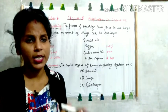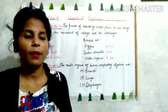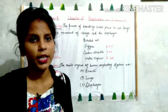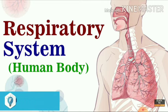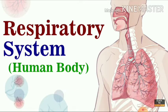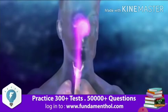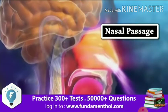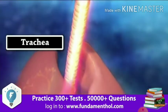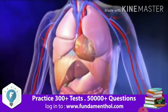We will see this with the help of a video for better visualization. Now we will study about the respiratory system of the human body — which respiratory organs are involved. We have studied that many respiratory organs are involved: nose, nasal passage, trachea, bronchi, lungs, and diaphragm.